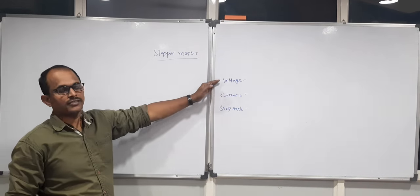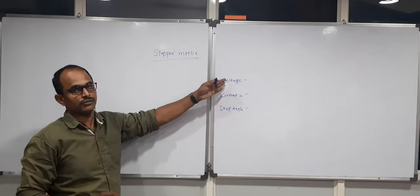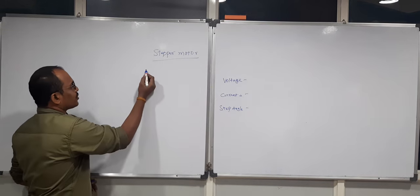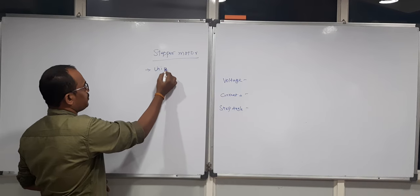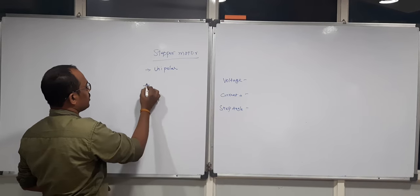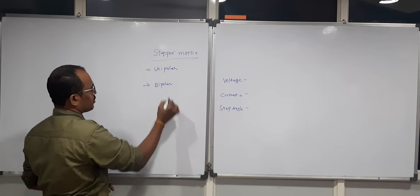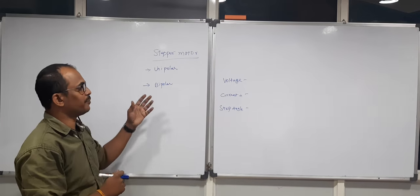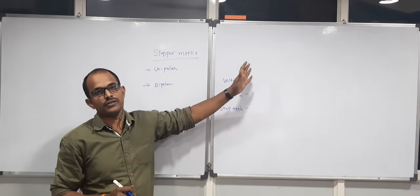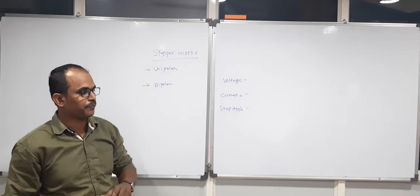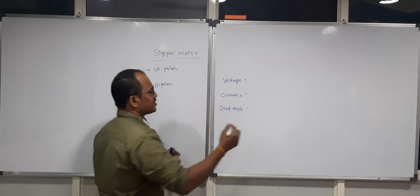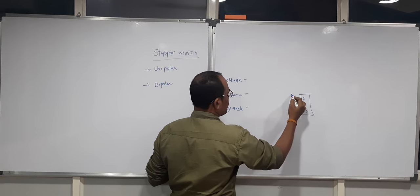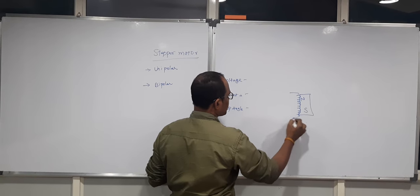Every stepper motor has its own standard characteristics, so you need to check what step angle it will make for each step. Stepper motors are classified into two types: unipolar and bipolar. This classification depends on the number of turns or coils present, and every stepper motor is constructed with a permanent magnet inside with a coil mechanism arranged in a cyclic way around it.